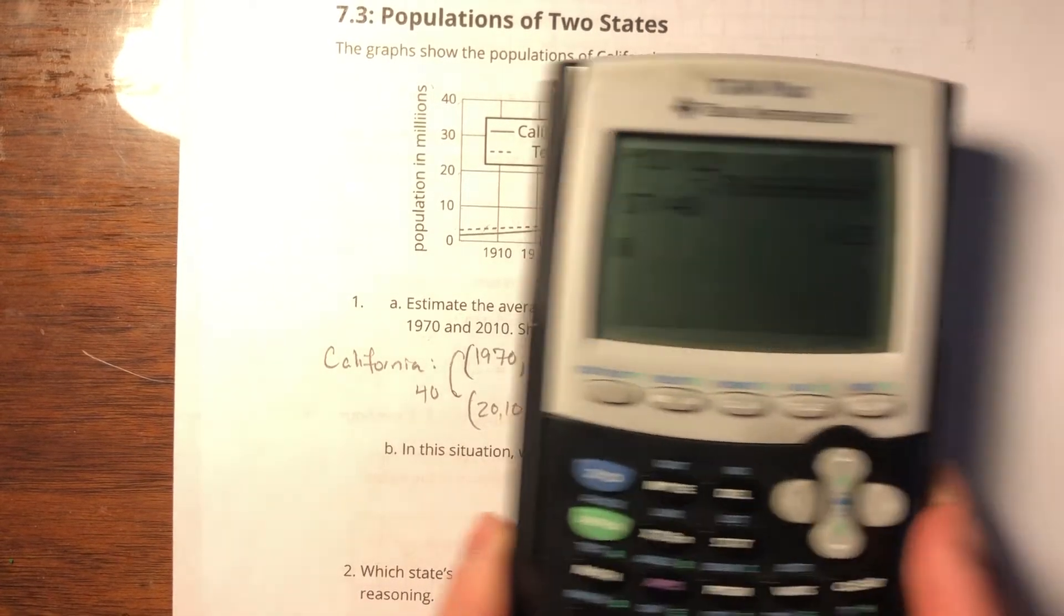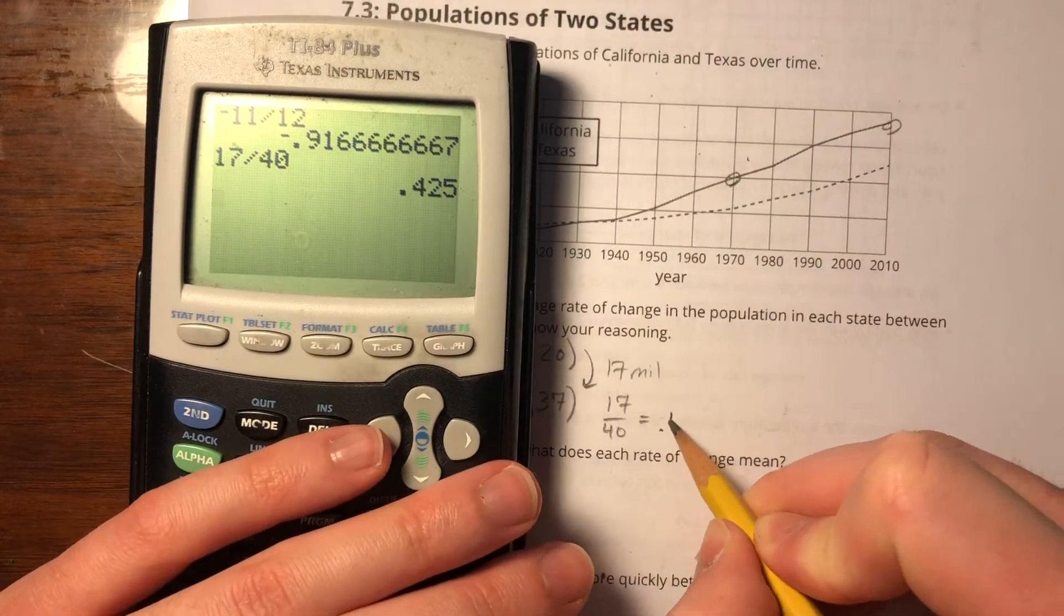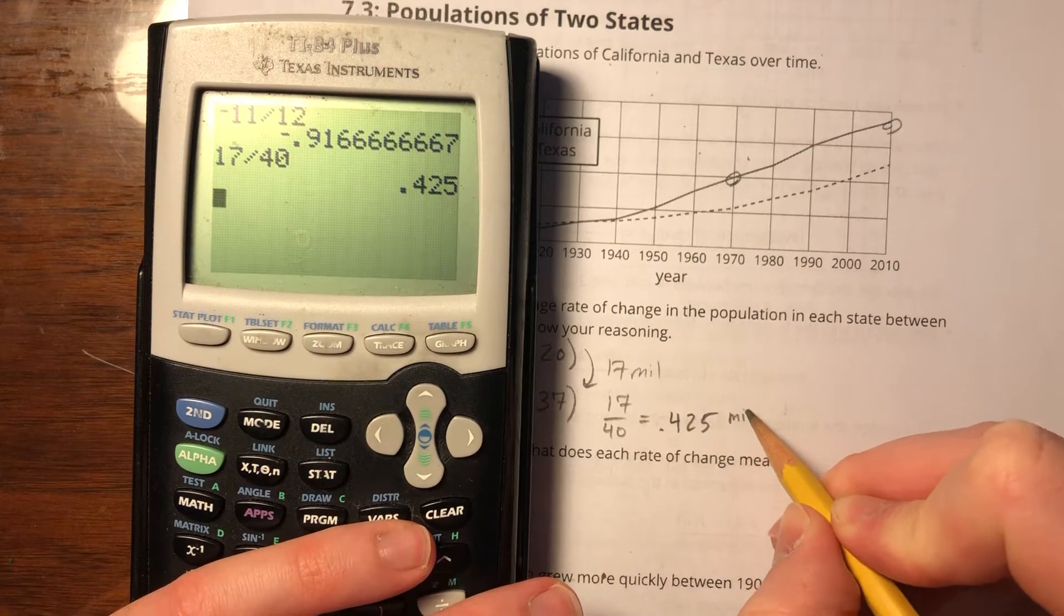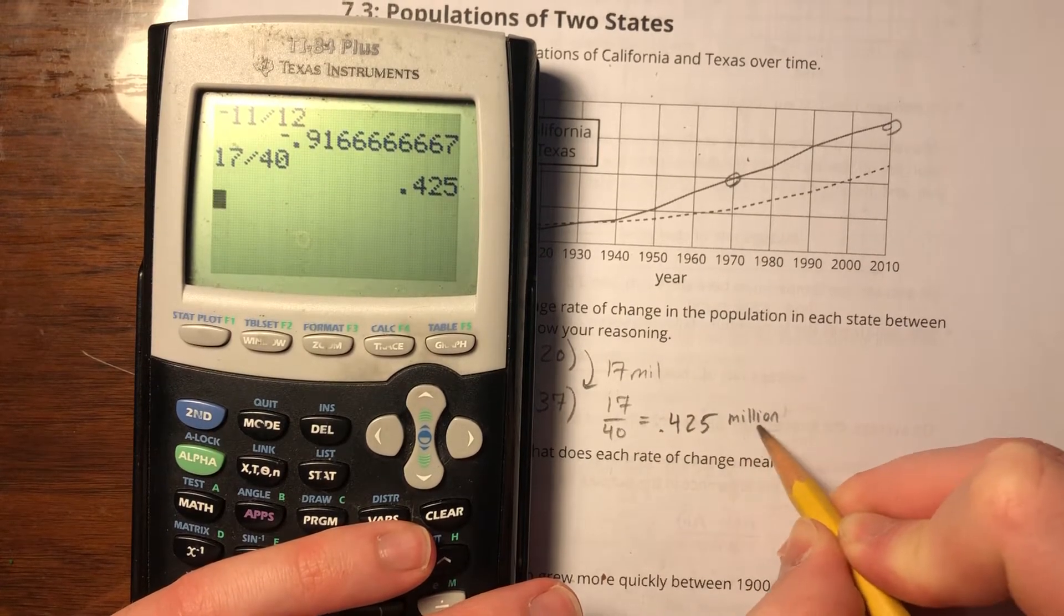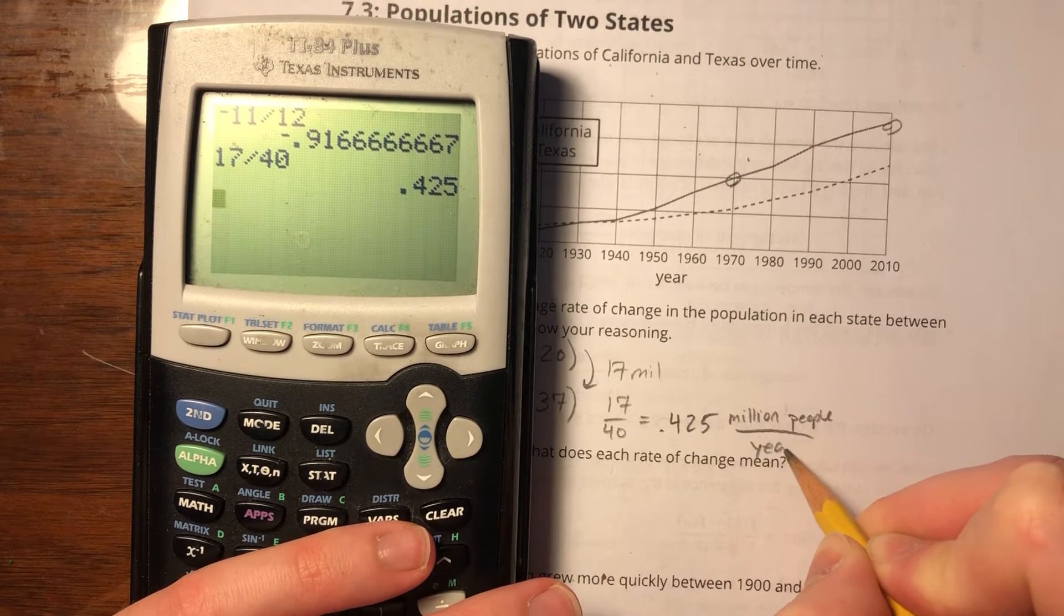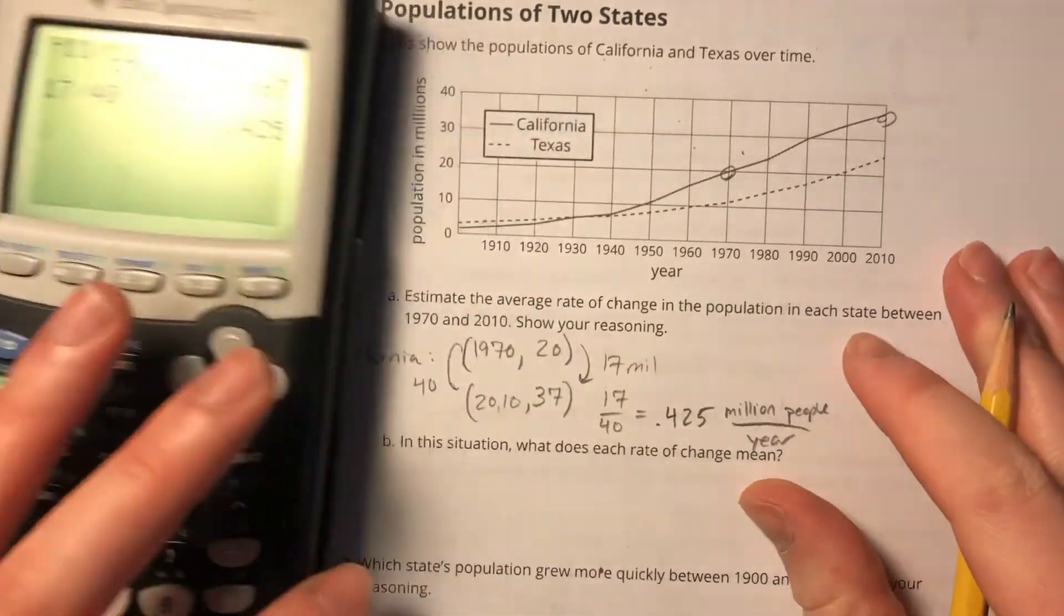And we get 0.425. So that would be 0.425 million people per year.